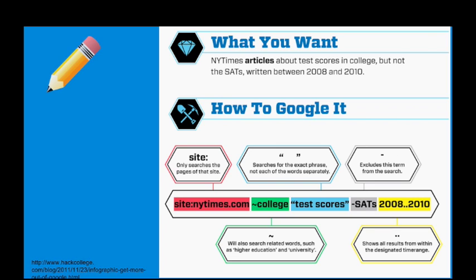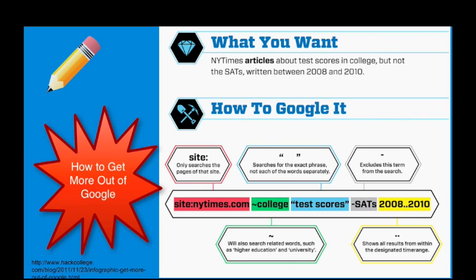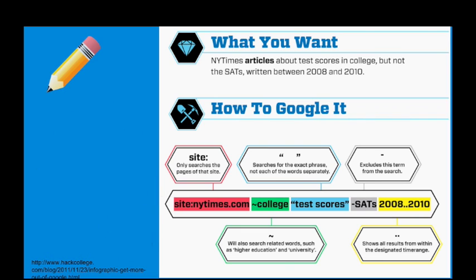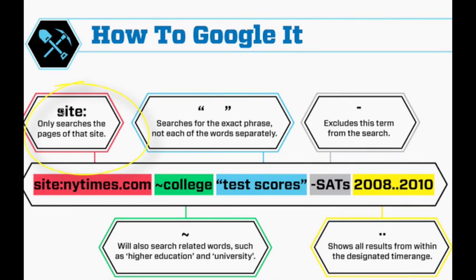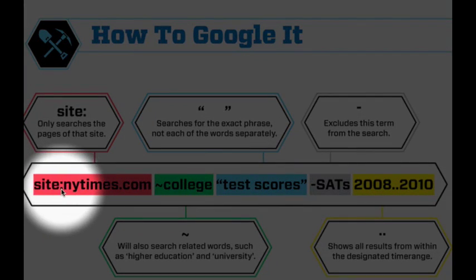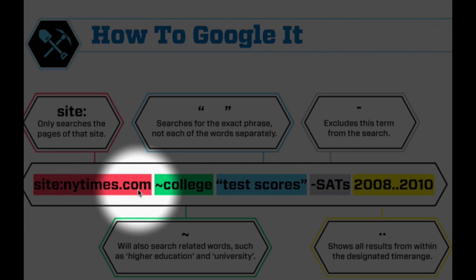This is taken from an infographic I love called 'How to Get More Out of Google' — write that down in your notes so you can come back to it. Let's say you want to find a New York Times article about test scores in college, but not the SATs, written between 2008 and 2010. First, you add 'site:' at the beginning of your search, which allows you to search specifically within nytimes.com.